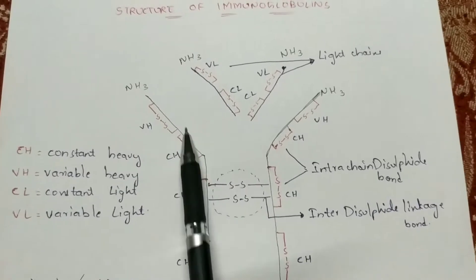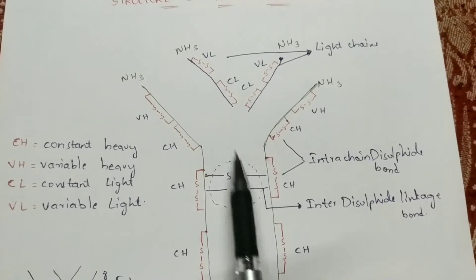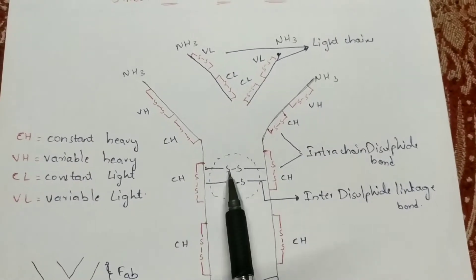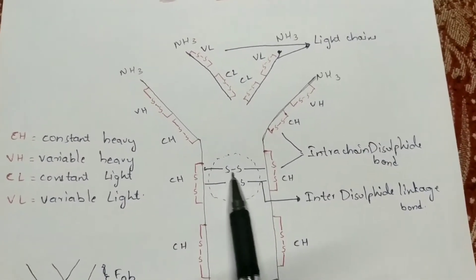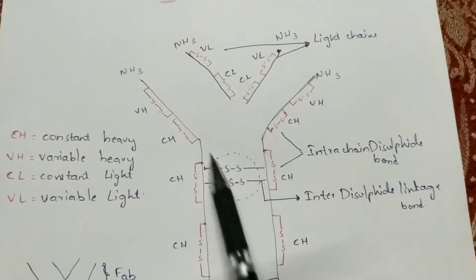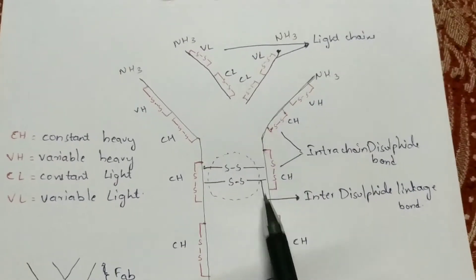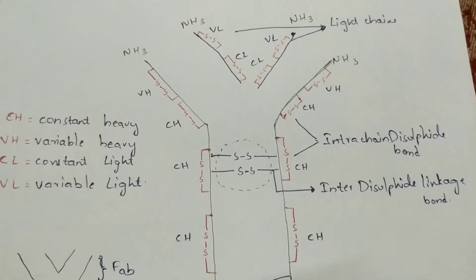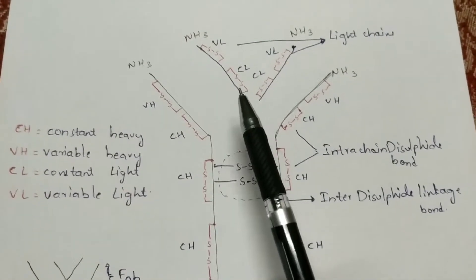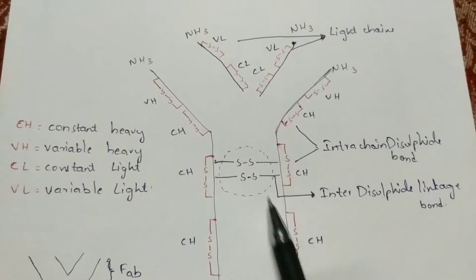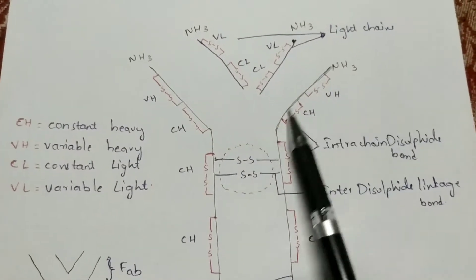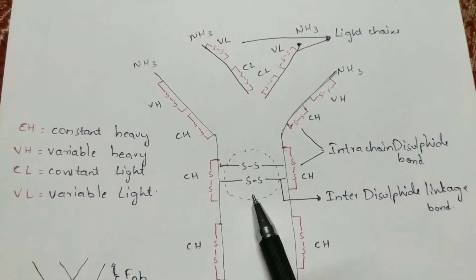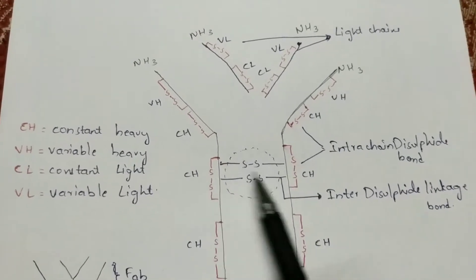If you see here, in the structure, each of the heavy chains will get bonded by disulfide linkage. This is the first heavy chain and this is the second heavy chain. Both of these heavy chains are linked with inter-chain disulfide linkage bonds. There are also intra-chain disulfide linkages present.